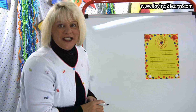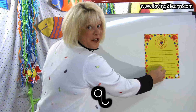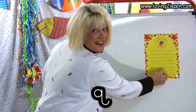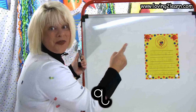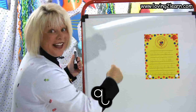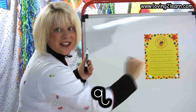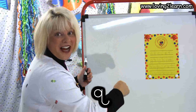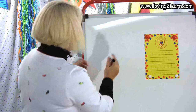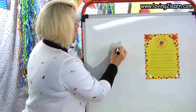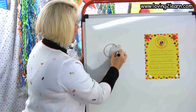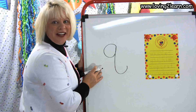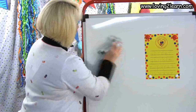The next letter is the letter Q. Q, we circle around the top, straight line down, and a fish hook out. Let's do that in the air: circle around the top, straight line down, and a fish hook out. Let's write it on the wipe-off board: circle around the top, straight line down, and a fish hook out. There's the letter Q.